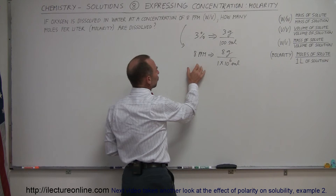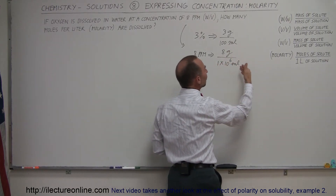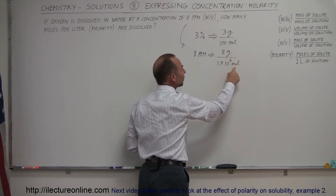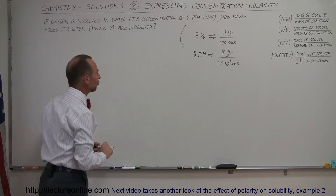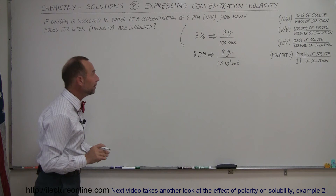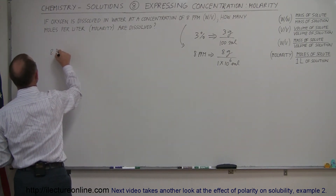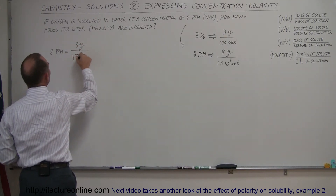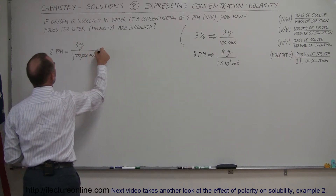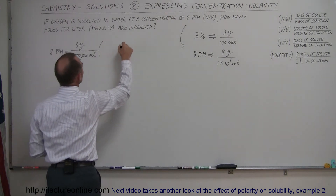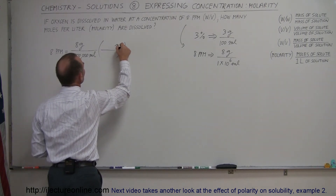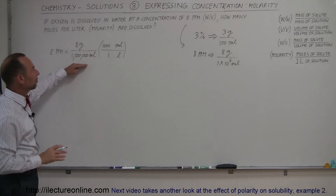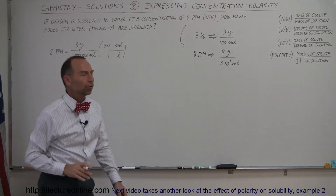So now we're going to take this concentration of 8 grams per million milliliters and convert it to moles per liter. We have to go from grams to moles and from milliliters to liters. Converting milliliters to liters is straightforward since there are 1,000 milliliters in one liter. We write 8 grams per 1,000,000 milliliters, then multiply by the conversion factor: 1 liter per 1,000 milliliters. This gives us liters in the denominator, which is what we need.